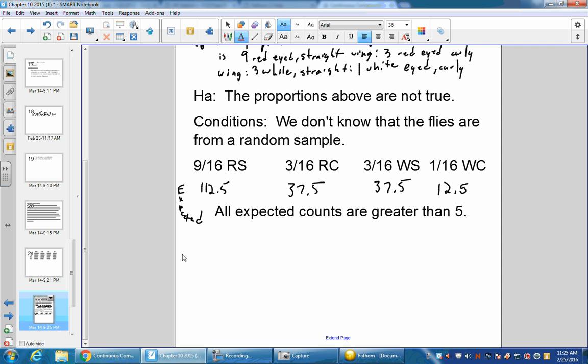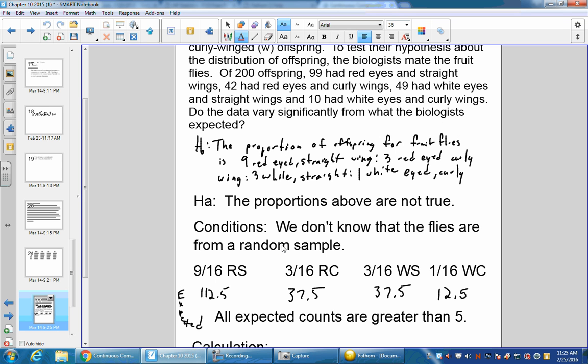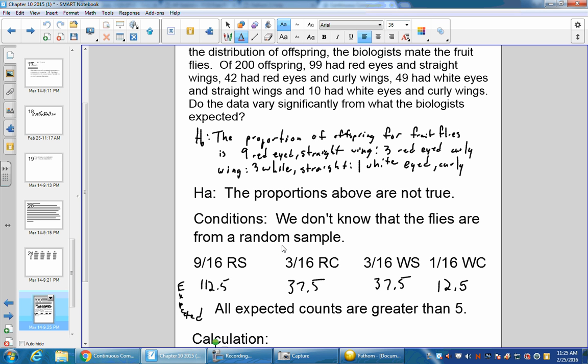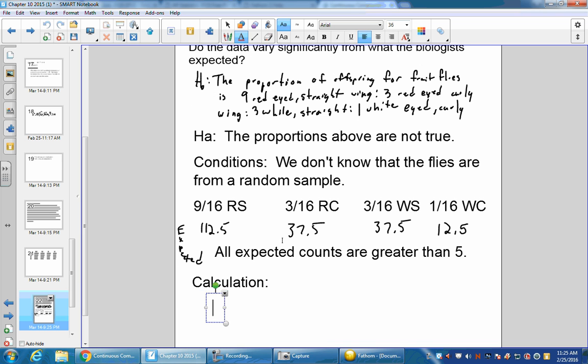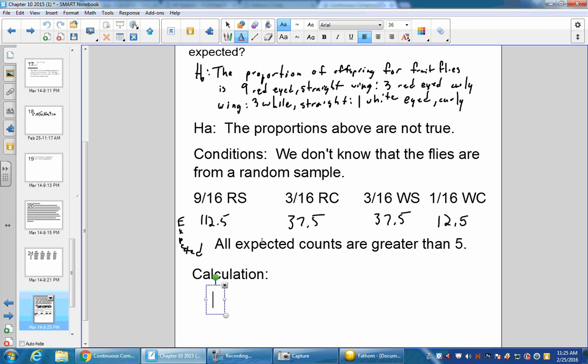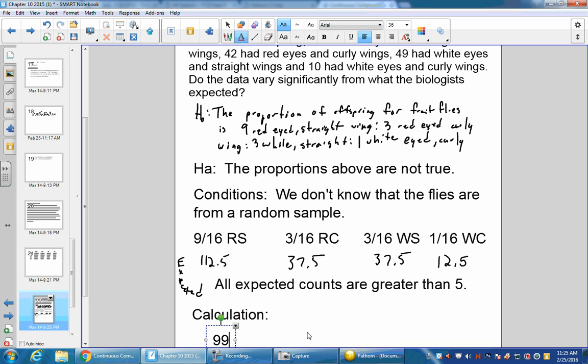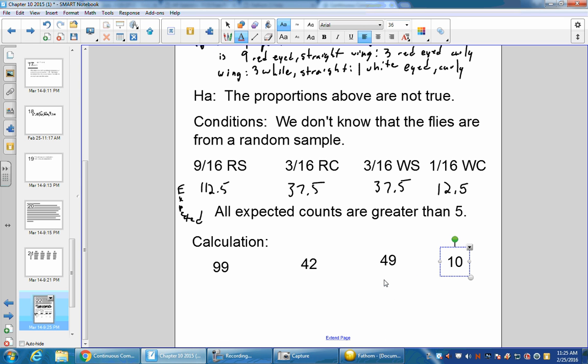Now calculations. We want to calculate based on these counts. We know the expected. The actual counts were 99, 42, 49, and 10. To show our work, we're going to use observed minus expected squared over expected.